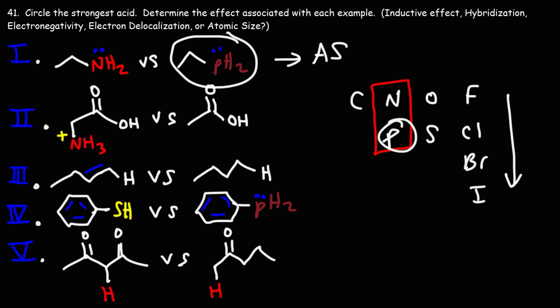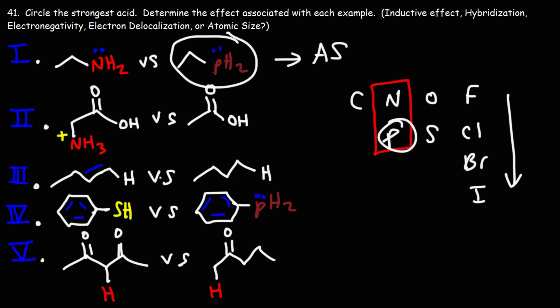Now let's look at number two. Here we have an amino acid, which is glycine, and here we have acetic acid. We know the pKa for acetic acid is 4.75. For the amino acid, the carboxylic acid has a pKa of around 2.2 to 2.3.